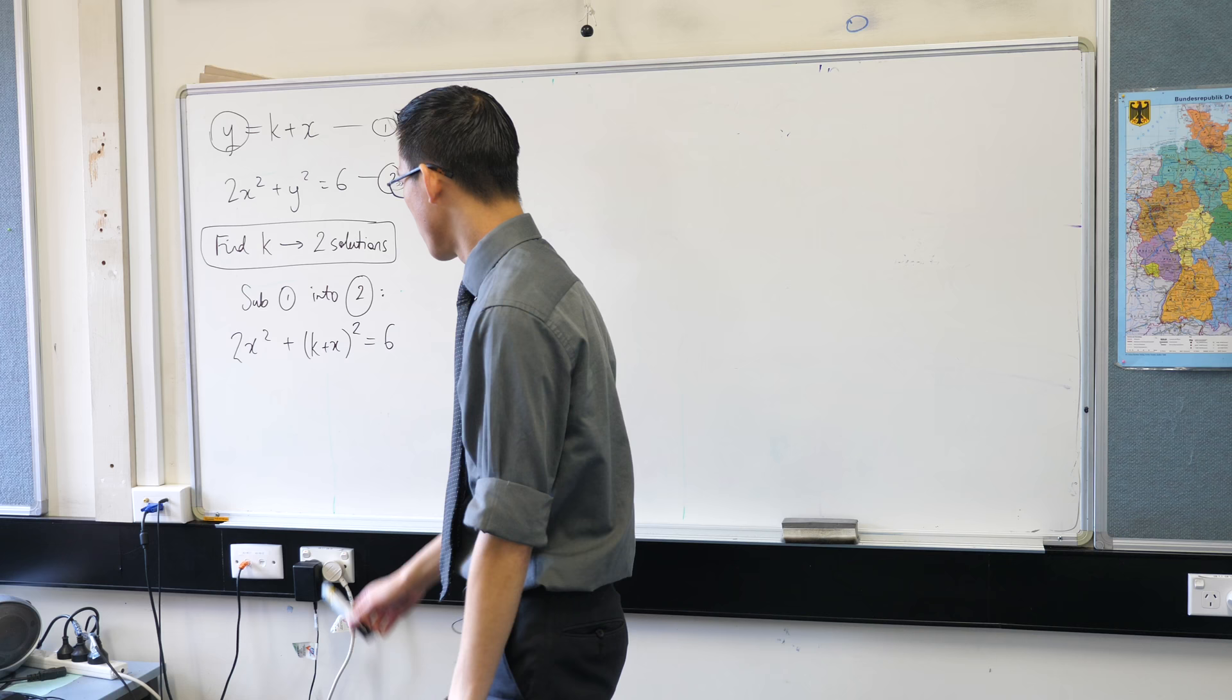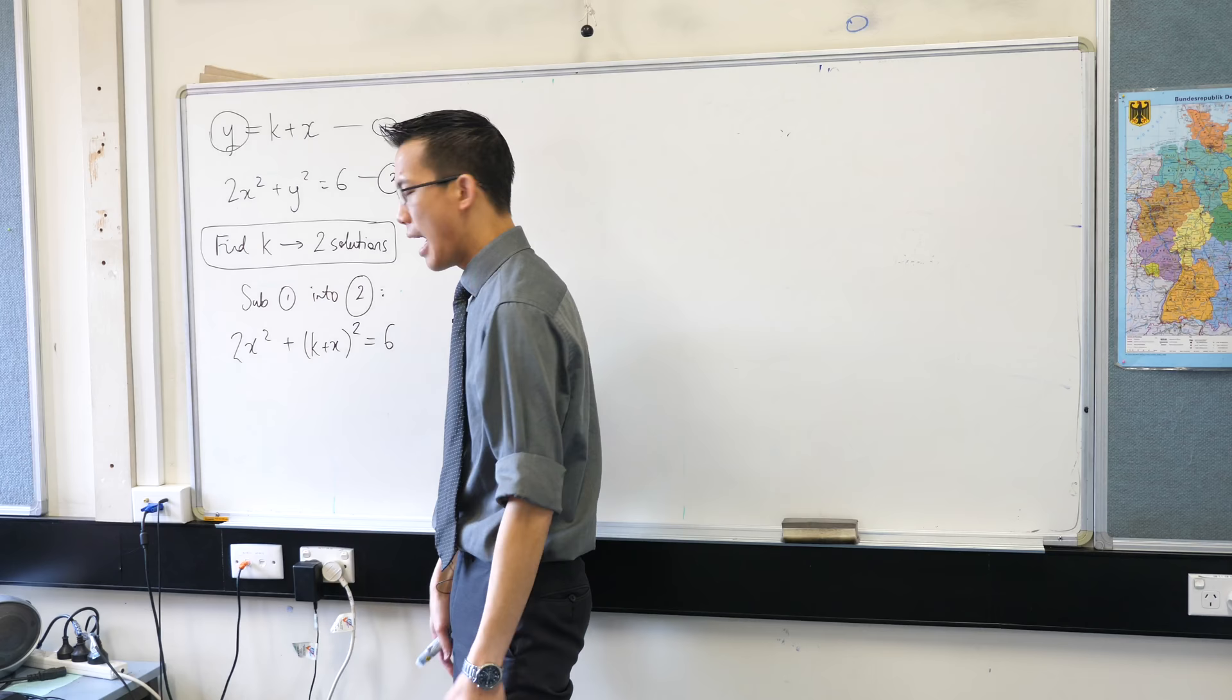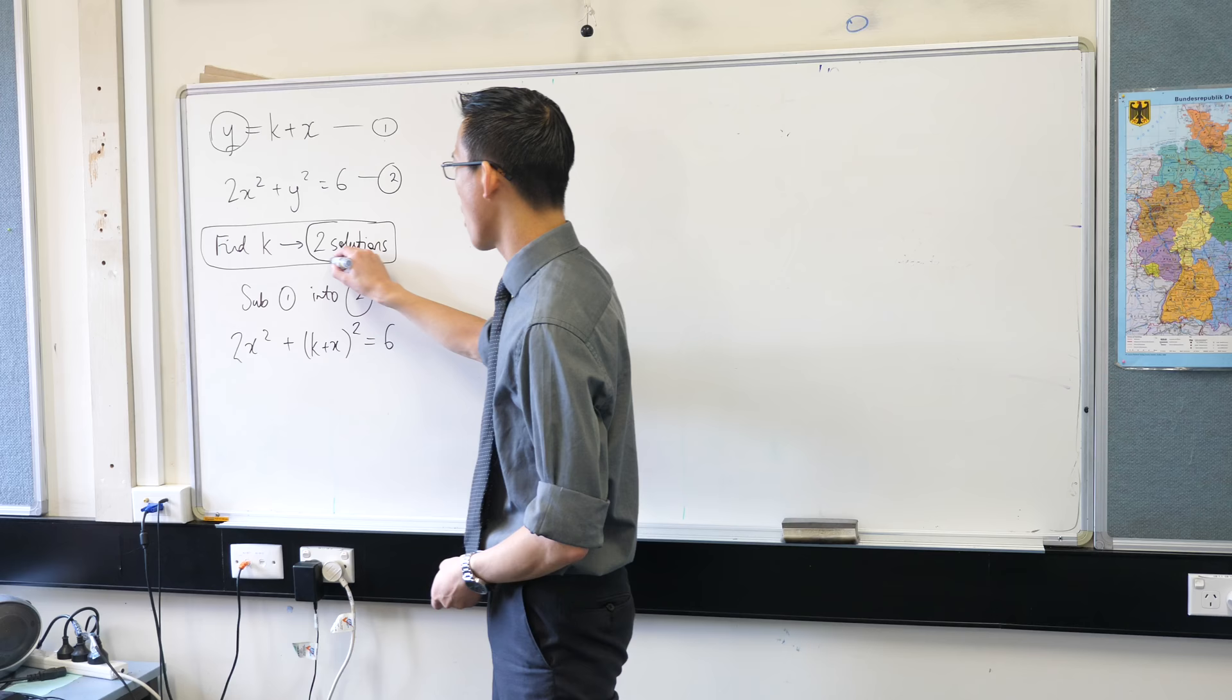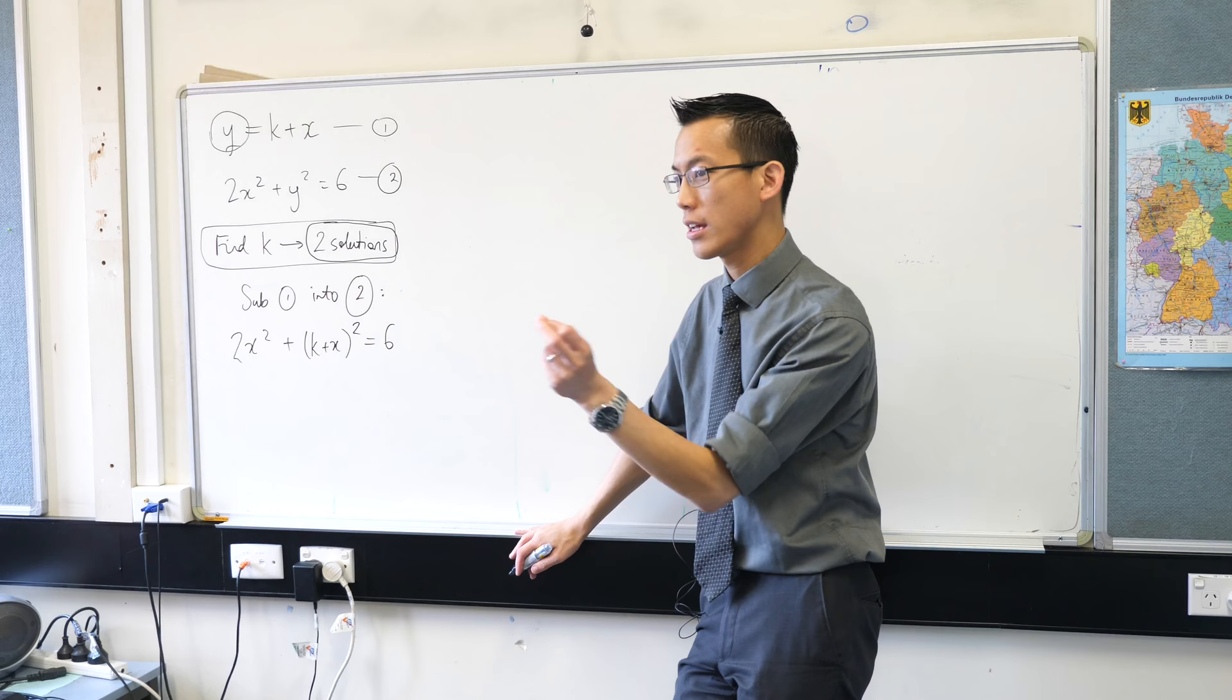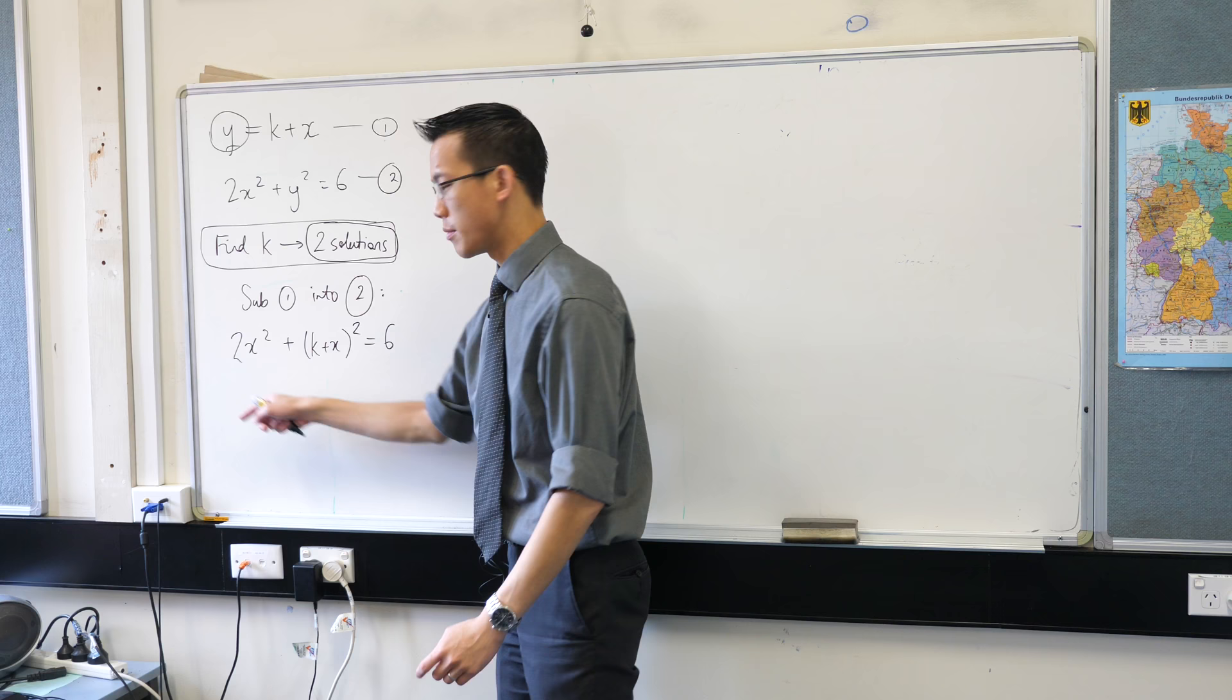x and y are variables but k is the constant so therefore when you look at this, this is an equation with x and it's a quadratic equation. Everything is in squares. And I'm really good at dealing with quadratic equations. I can find how many solutions there are to a quadratic based on, now which piece of knowledge do we use in quadratic theory to work out whether a quadratic equation has no solutions or one solution or two? I'm gonna use the discriminant.